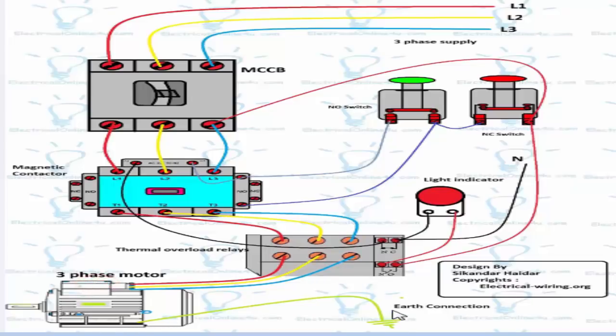Here I shown the earth wire or earth connection which is also connected with the three phase motor. Make sure if your direct online starter box is made from metal then provide also the earth wire to the box. This is the main wiring.